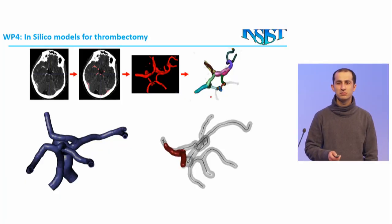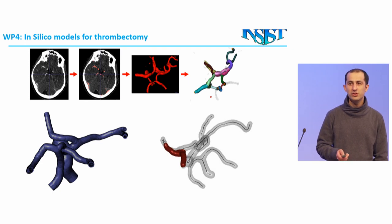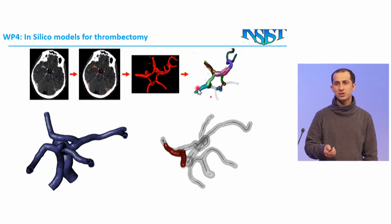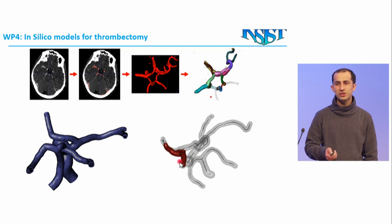The first thing that we should investigate is reconstruction of the actual vasculature geometry from the CT imaging from the clinicians. We got the imaging data, we made software to automatically convert the CT imaging to geometry, and then we constructed finite element models from those geometries. We were also able to position the blood clot in the correct position based on the medical images.